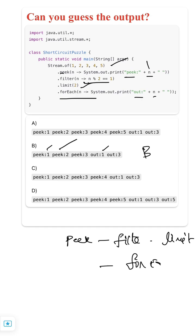Next again peak 2. 2 is not an odd number so it will not go down. Next 3, peak is 3, then it will go to print 3.